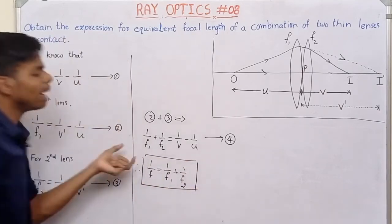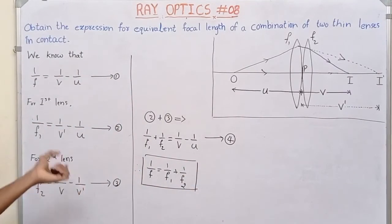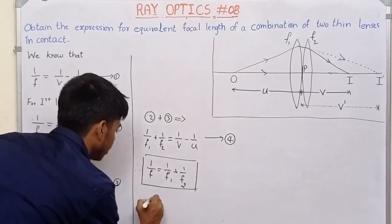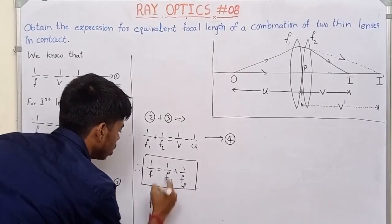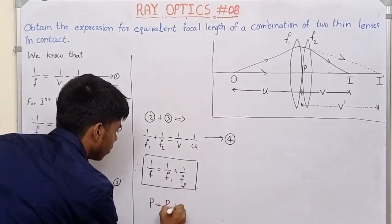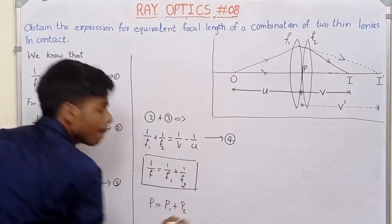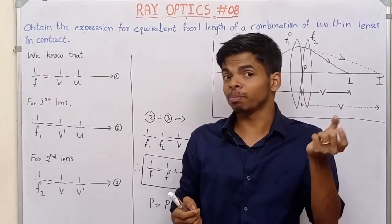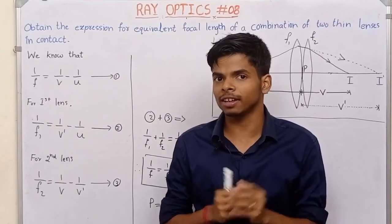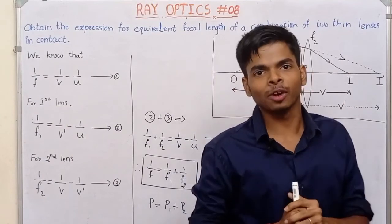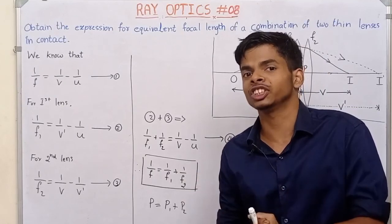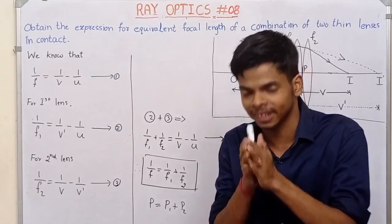So 1 by F equals power of lens. 1 by F1 equals P1, so P1 plus P2. That's the lens power. The unit is diopter. This is a classic video — like, share, subscribe to the channel. Thank you.